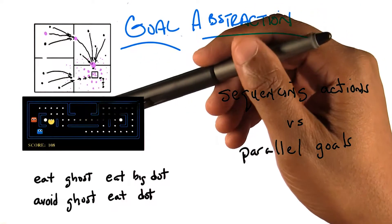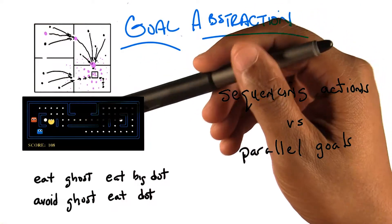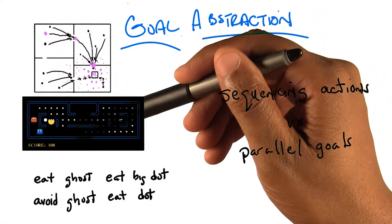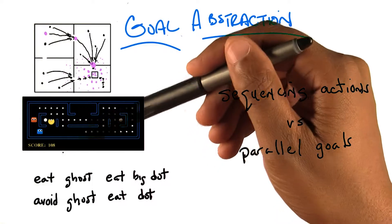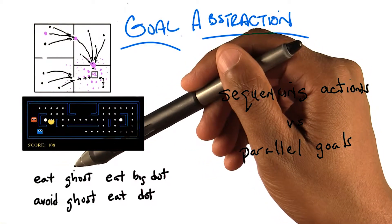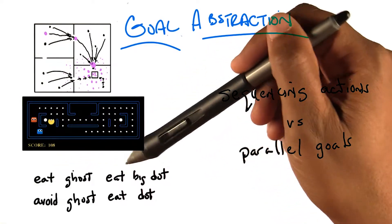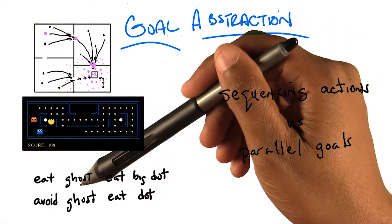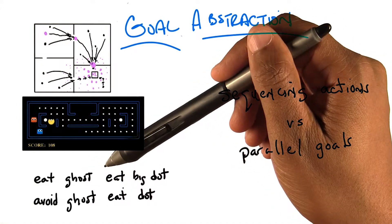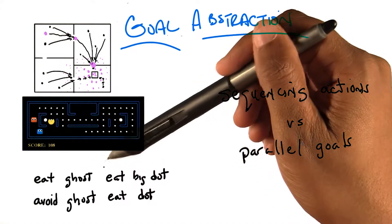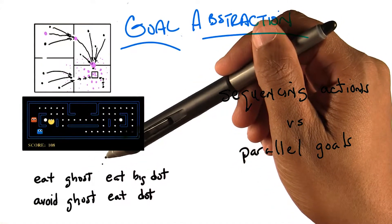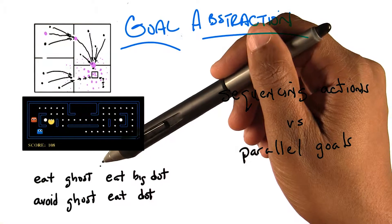Maybe this becomes clear with an example. If we go back to the Pac-Man example, at all times you want to eat ghosts, eat dots, eat big dots, and avoid ghosts. They're sort of all happening at the same time. It's just that at any given point in time, one of them happens to be ascended.